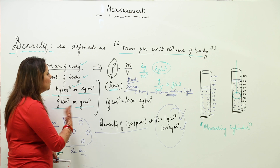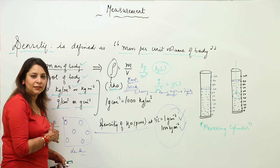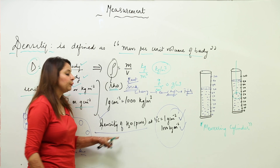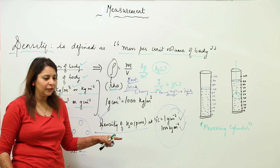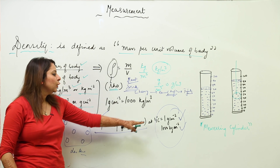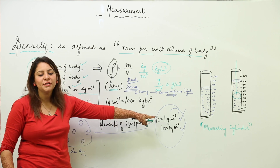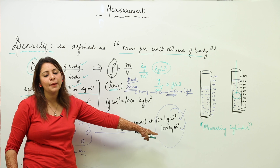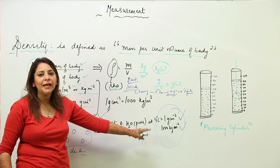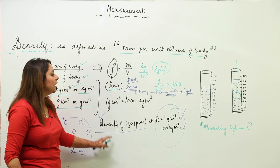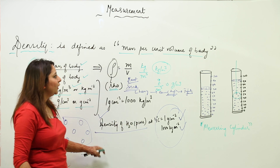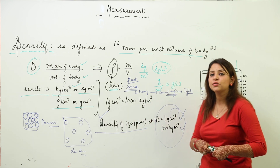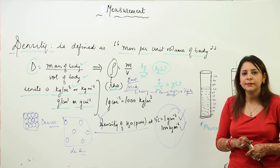You need to remember that the density of pure water is 1 g/cm³ in CGS units and 1000 kg/m³ in SI units. Now, suppose we want to actually measure the density of any substance — for example, a stone.